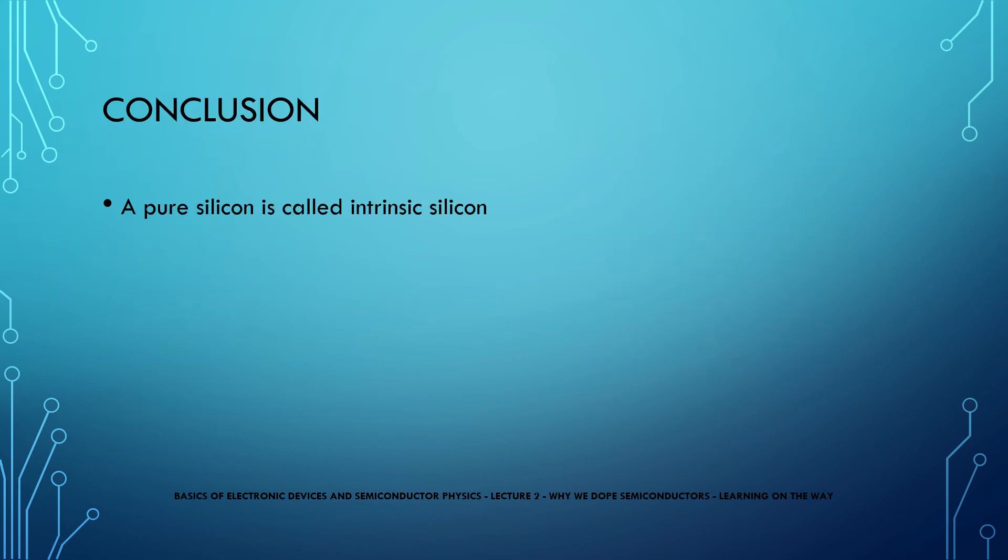Since a pure semiconductor is called an intrinsic semiconductor, a doped semiconductor is called an extrinsic semiconductor. In the next lecture, we would see more details about the effects of doping with respect to a concept called Fermi levels.